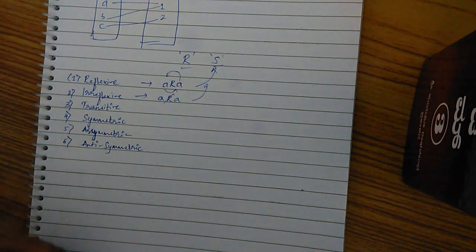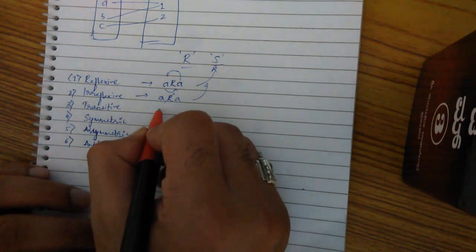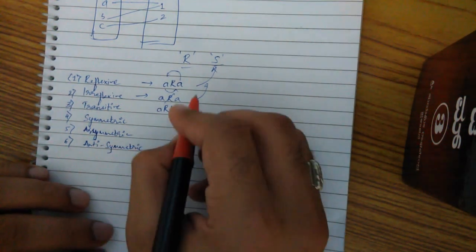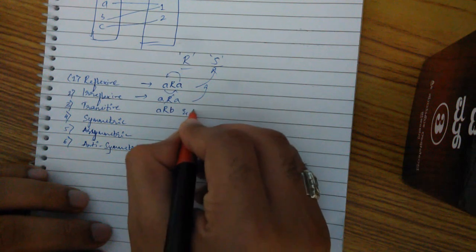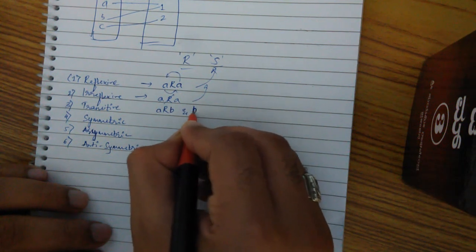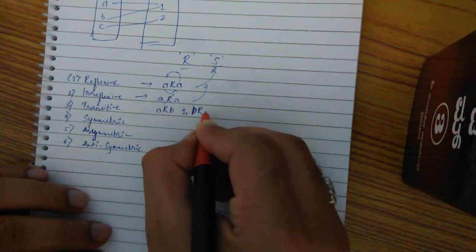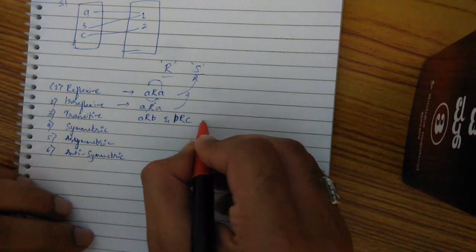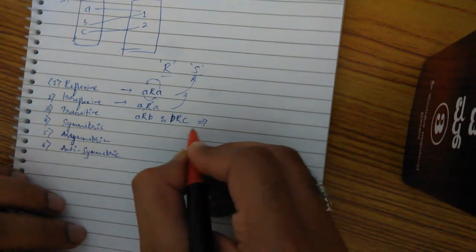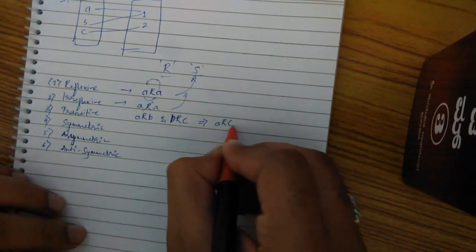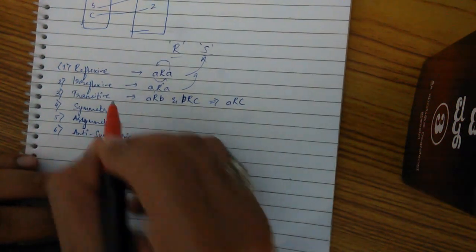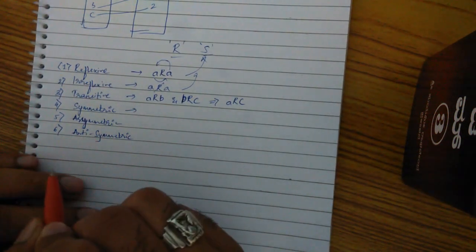Transitive is represented like this: if A relates to B, and B relates to C, that implies A relates to C. Then we have the symmetric relationship.